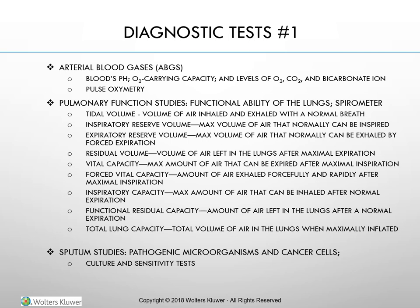Pulse oximetry is a non-invasive method using a light beam to measure the oxygen content of hemoglobin — the arterial oxygen saturation (SaO2). The monitoring device attaches to the client's earlobe or fingertip and connects to the oximeter monitor, which registers wavelengths of light to calculate SaO2. Normal values are 94% or higher.